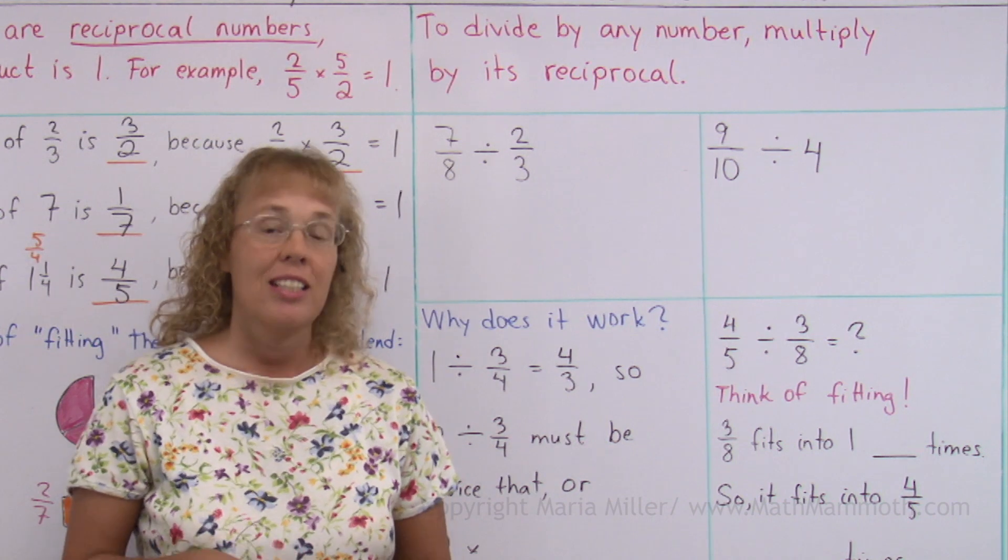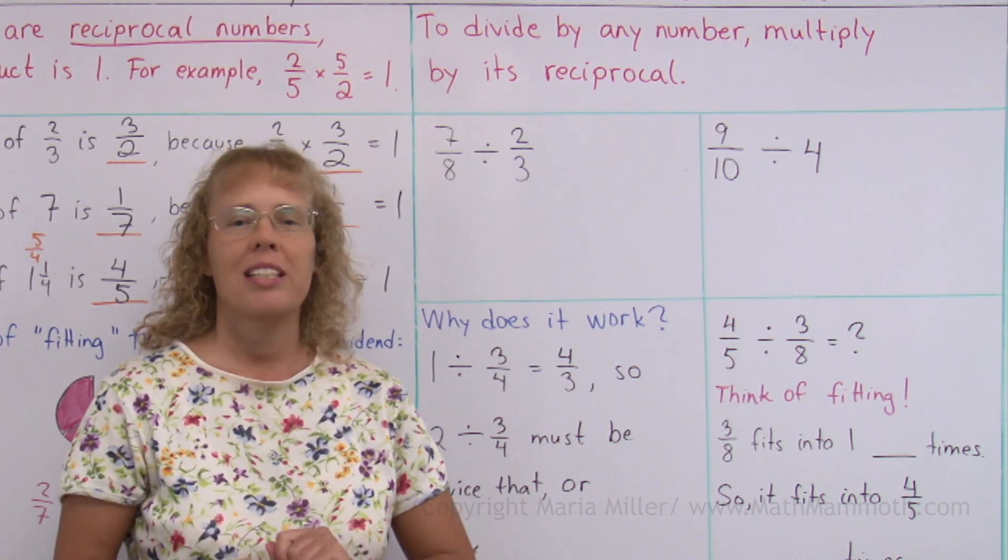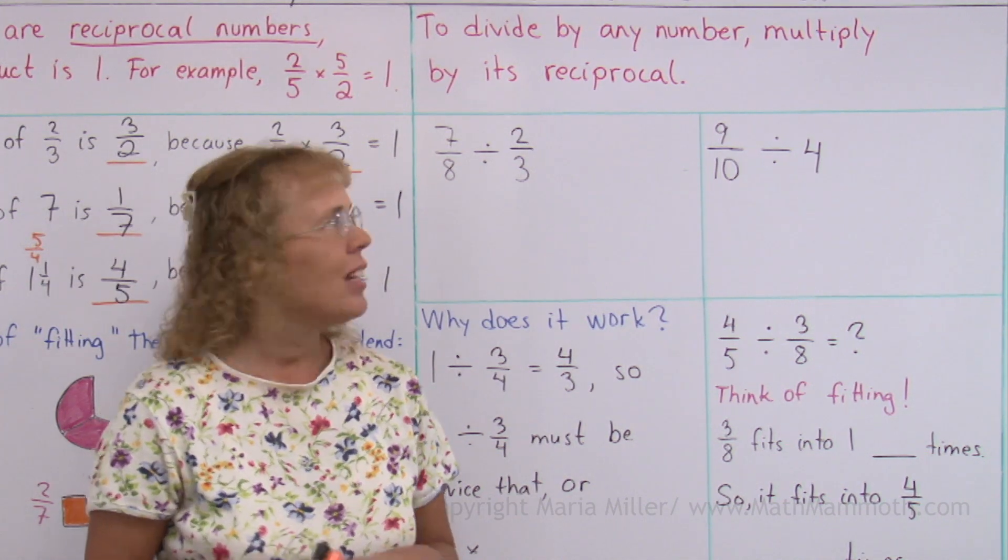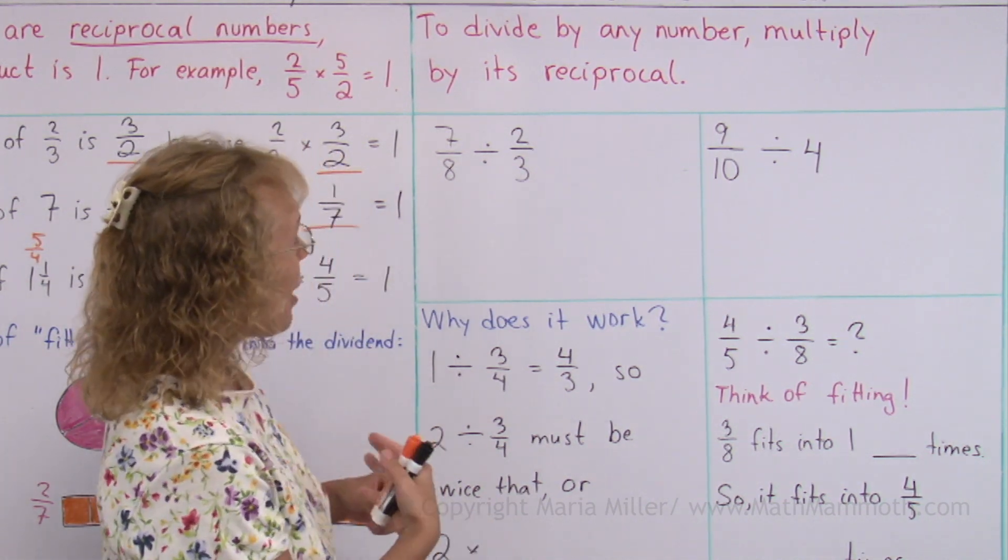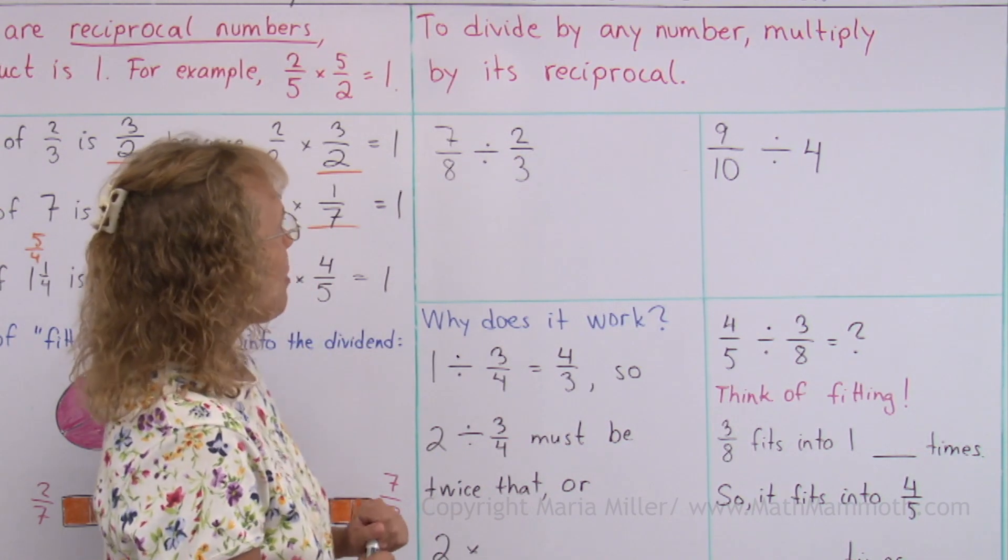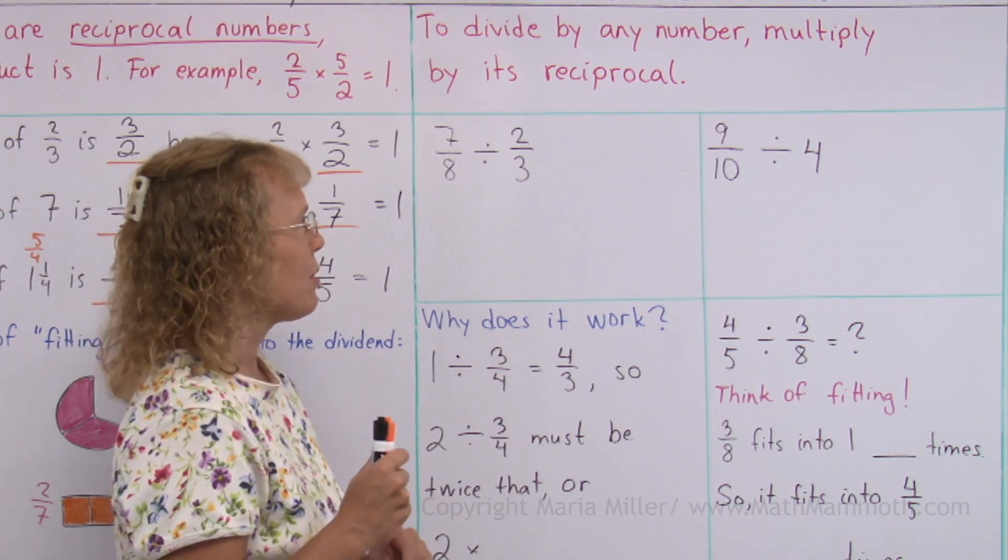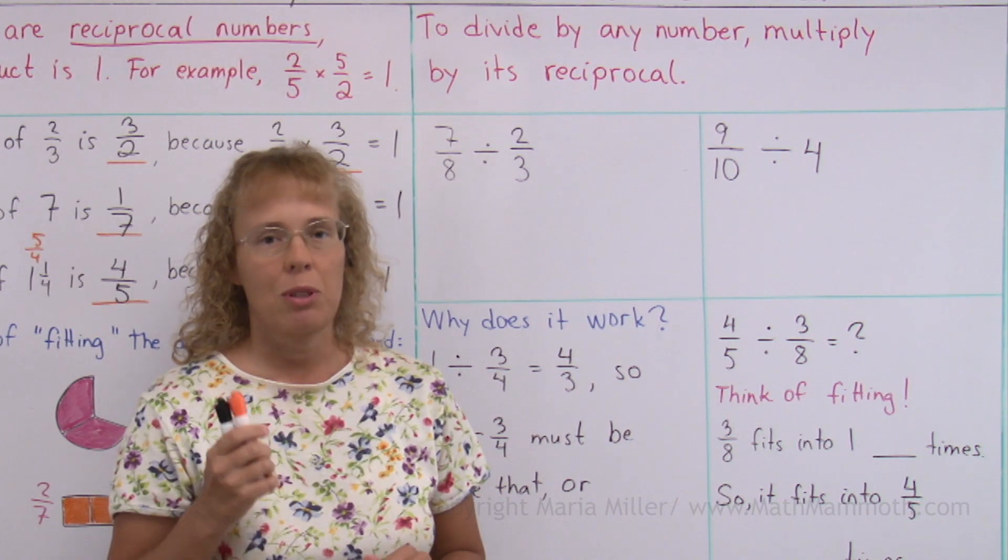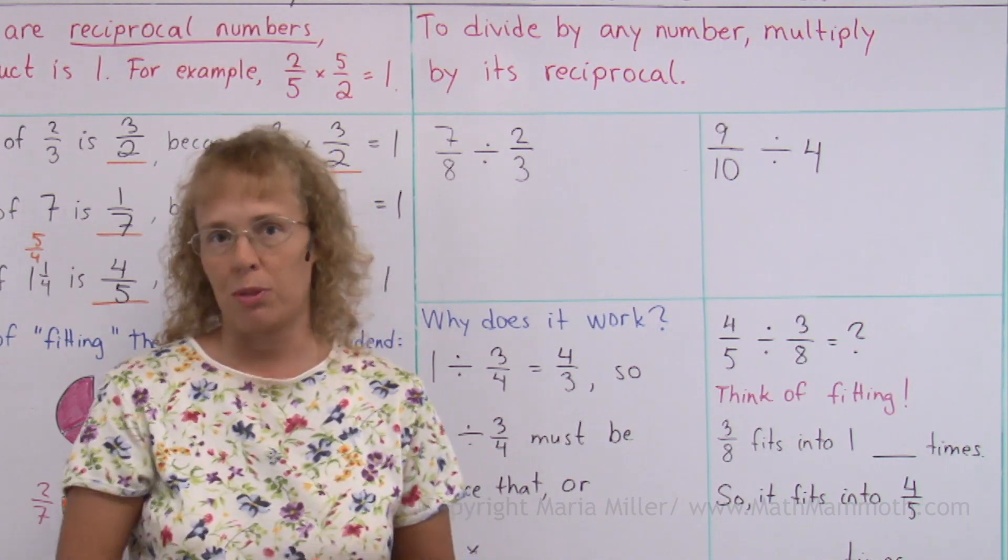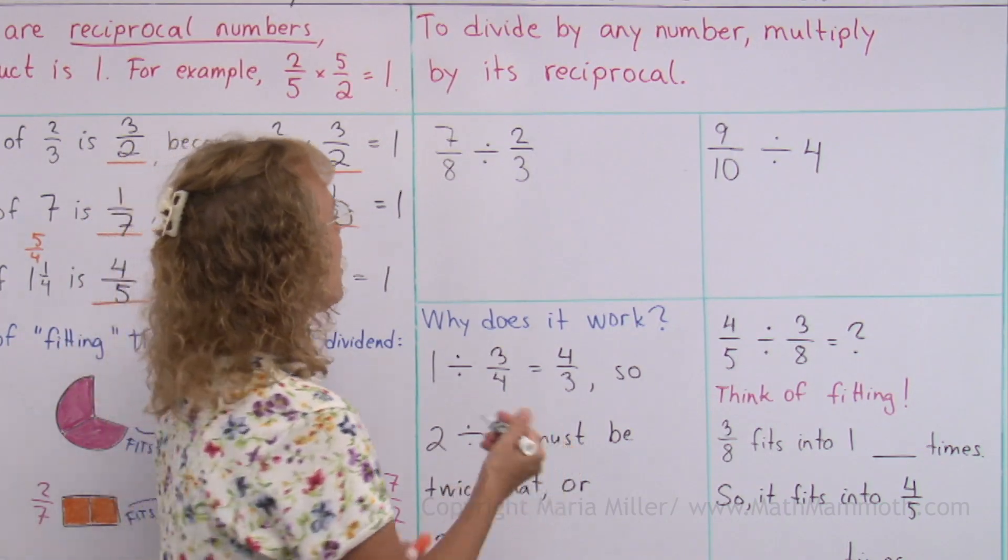Now that we have studied reciprocal numbers, we can go back to the shortcut for fraction division. And I wrote here, to divide by any number, for example, to divide by a fraction, multiply by its reciprocal. This means that we will change every division problem here into a multiplication problem.